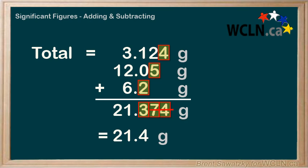Therefore, our final answer is 21.4 grams. For a subtraction, you would use the exact same type of alignment rationale to ensure that you have one uncertain digit.